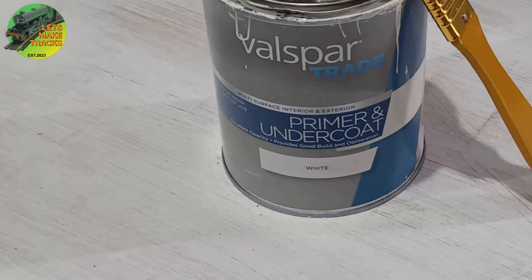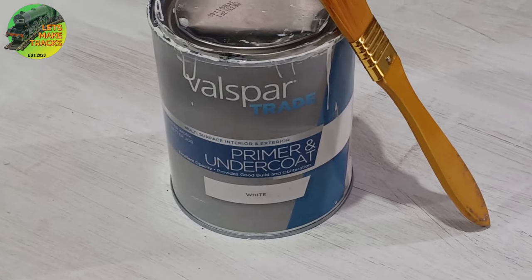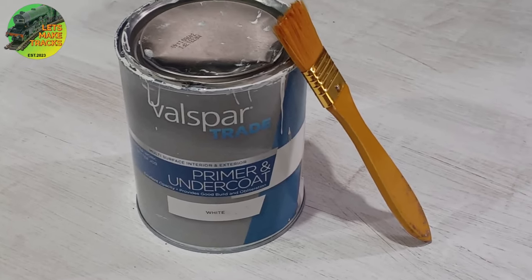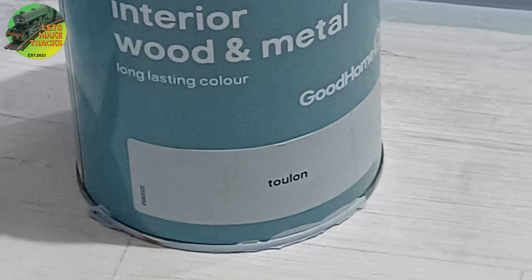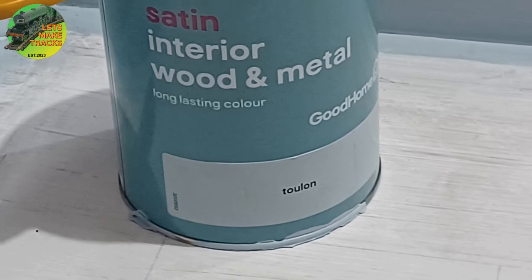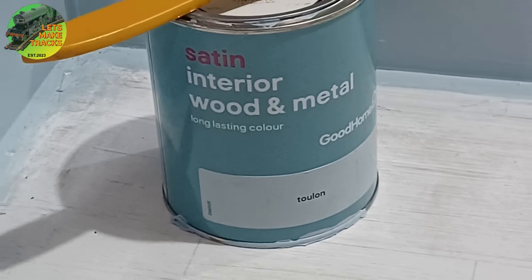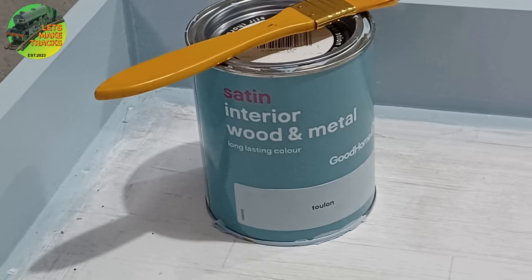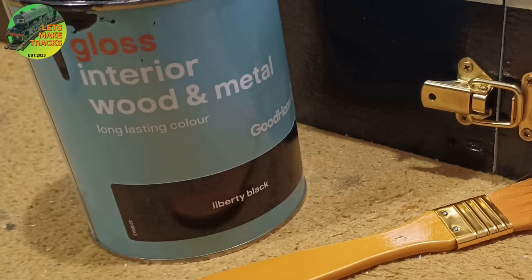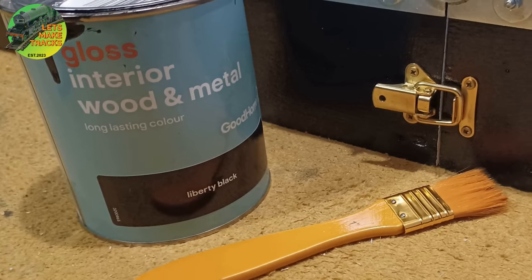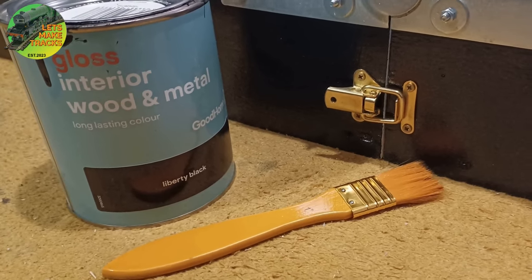For the undercoat, I used this Valspar primer and undercoat in white along with the PVA. Covered the whole board. Then we have a towel on blue. This is for the sky. This is the closest shade I could get without it being too cartoony. And then we have a Liberty black gloss finish for the outside frames. I think it's come out nicely.